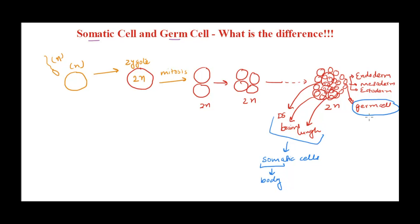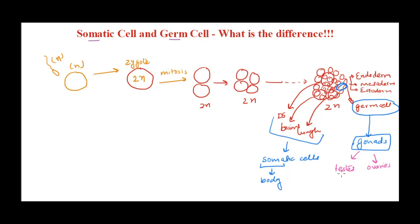The germ cell line differentiates and develops into gonads. These three layers develop into all different cell types and tissues in our body, but a specific set of cells differentiates into germ cells, which further differentiate to produce gonads. For males the gonads are the testes, and for females the ovaries. The cells produced in the gonads — in the testes and ovaries — are called germ cells.